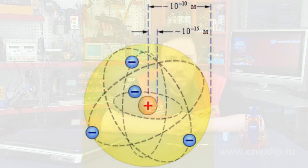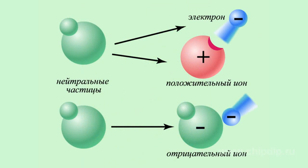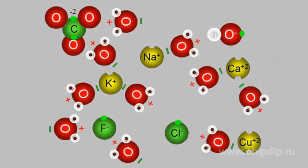Very common carriers of electric charges are ions. Atoms in their normal state are electrically neutral. The positive charge of the nucleus is completely offset by the negative charges of the electrons in the electron shells of the atom. However, atoms can lose electrons or capture excessive supernumerary electrons. In both cases, the atom becomes an ion. The atom with missing electrons has a positive charge, and with excessive electrons, a negative one.